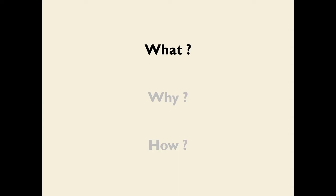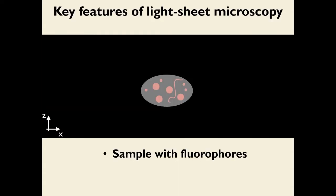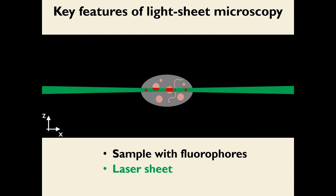So let's start with what light sheet microscopy is. Light sheet microscopy has several key features. Number one, it is a fluorescence-based technique, so you need to have a sample with fluorophores in that sample. The sample is represented by that oval, and the fluorophores are represented by those pink blobs and lines inside. Then you have a laser sheet — that is the light sheet — that intersects the sample coming in from one side.